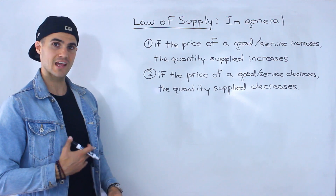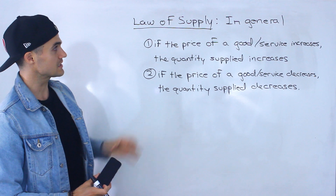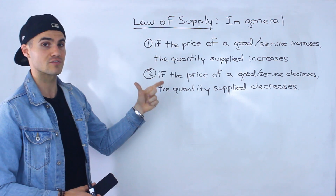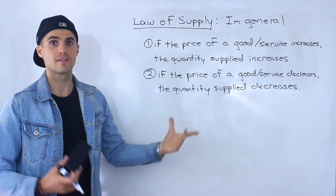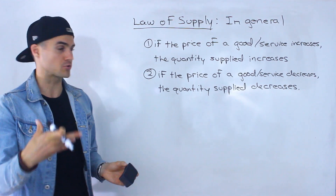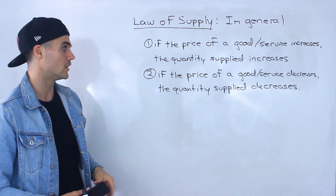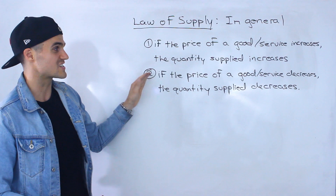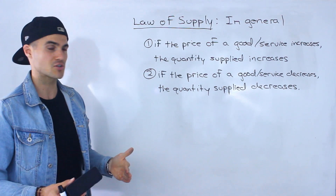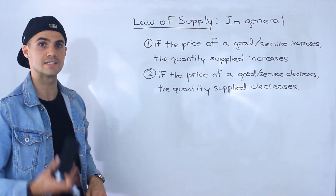From that simple example, let's introduce the law of supply. The law of supply states that if the price of a good or service increases, then the producer is going to be more motivated and have more incentive to produce more — so the quantity supplied is going to increase as well. Versus if the price decreases, the producer won't have as much incentive, so the quantity supplied is going to decrease.